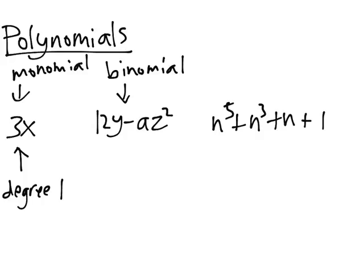So if we look at the second polynomial, 12y minus az squared, first notice that 12y has degree 1, since it's just y, not raised to any power.